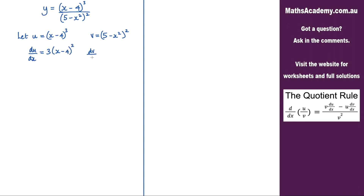dv by dx uses the same principle. When we differentiate this bracket we would have negative 2x, which we multiply by the power to get negative 4x, then we have the bracket with the power reduced by 1, which gives us 1 — which we don't need to write.